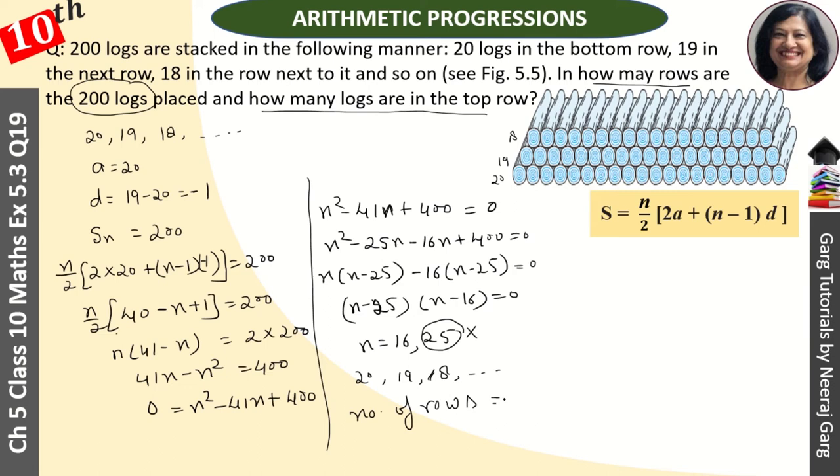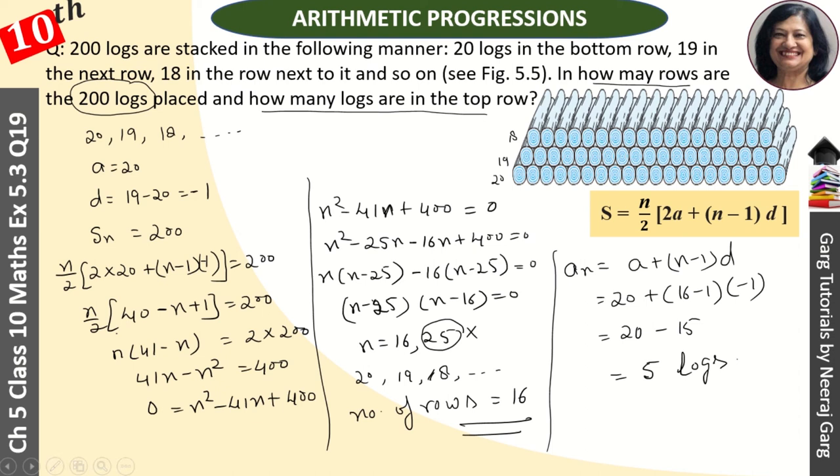So number of rows is 16. That's one answer. Now it asks how many logs are in the top row. Top row means counting from bottom, we need last row, meaning we need to find AN. The formula for AN is A plus N minus 1 times D. A is 20 plus 16 minus 1 times minus 1.